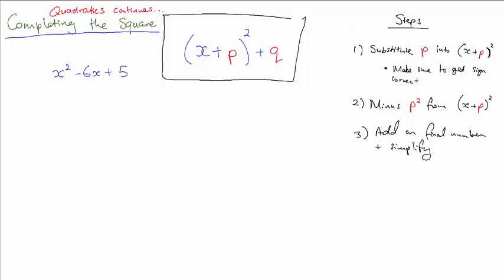So the first thing you need to do is choose your value of p. Now here's how it always works: p is always, and I mean always, half of the number in front of your x. Can you see your number here is minus 6? So your p is going to be minus 3. If I put x plus minus 3 into that bracket, it's going to actually just become x minus 3 squared.